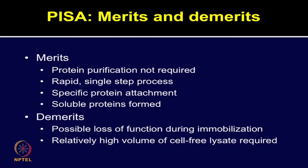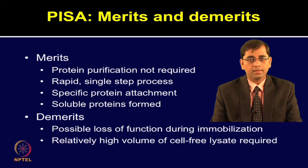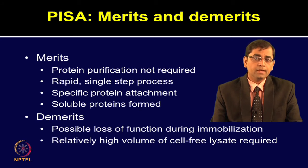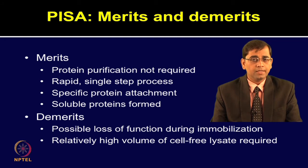After learning the working principle of PISA, let us discuss various advantages and disadvantages of this technology. PISA overcomes the traditional purification requirements for producing protein microarrays — protein purification is not essential. It gives a rapid single-step process. Because of the histidine tag and nickel-NTA interaction, specific protein attachment can be achieved. In this method, soluble proteins are formed. These are some of the major advantages of using PISA technology.